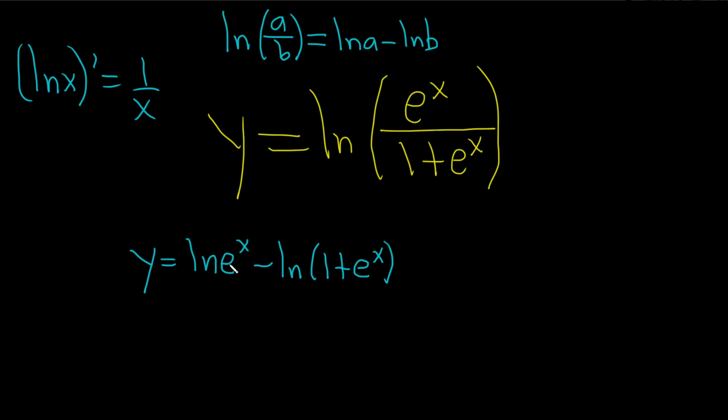And we can actually simplify this a little bit. These cancel. It's an identity. This is x minus the natural log of 1 plus e to the x.